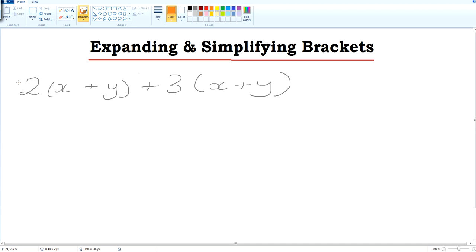We've got two lots of x plus y plus three lots of x plus y. So here's the first part, and this is the second part. So we do 2 times x and 2 times plus y, and then we do plus 3 times x and then plus 3 times y.